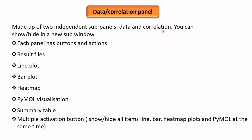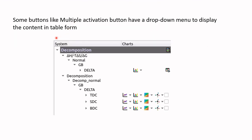The data correlation panel is made up of two independent sub-panels: data and correlation. You can show or hide these panels in a new sub-window. Each panel has different buttons and actions — you can view result files, line plots, bar plots, heat maps, and pymol visualization, as well as a summary table. There is also a multiple activation button that shows or hides all items — the line plot, bar plot, heat map, and pymol — at the same time with a single click.